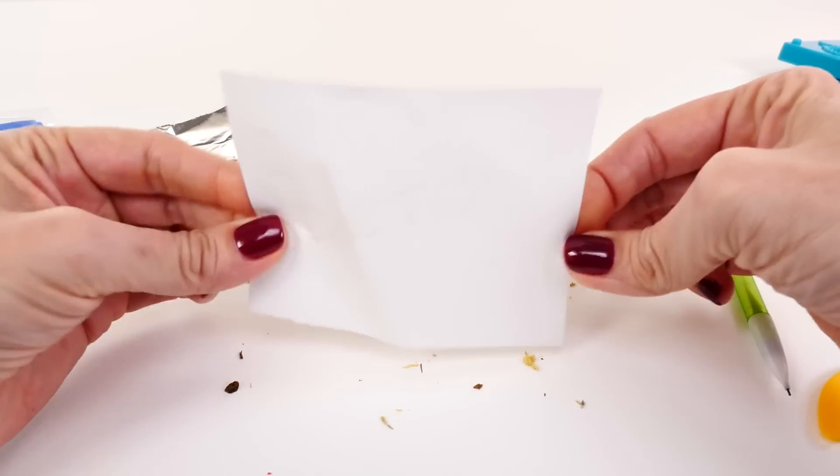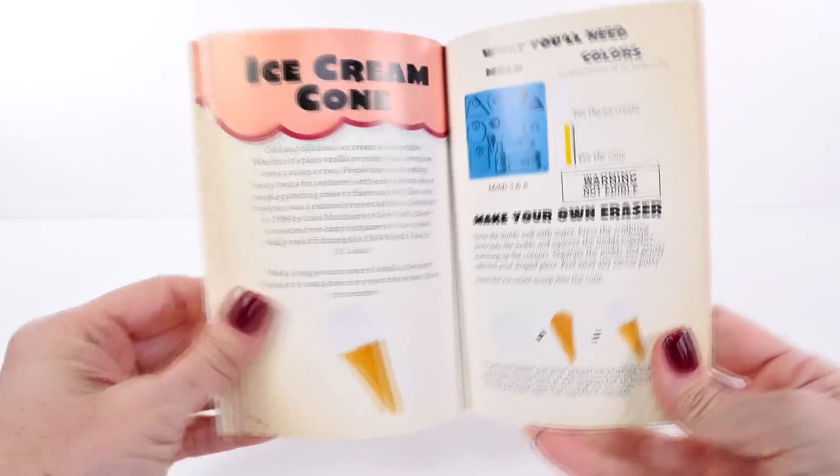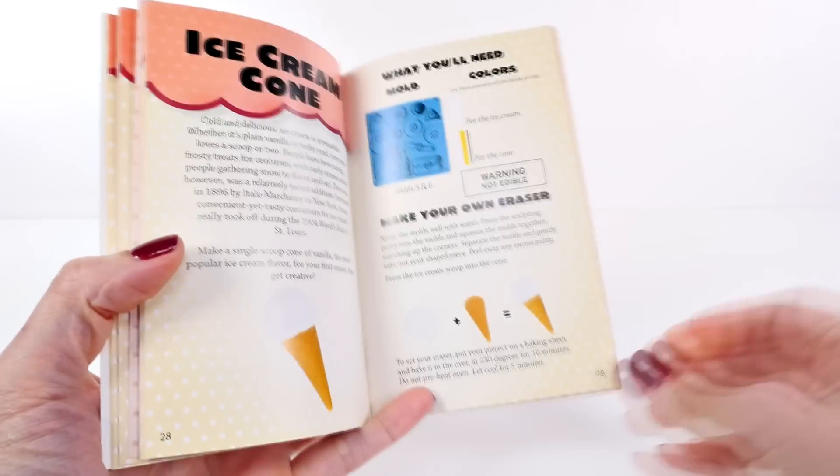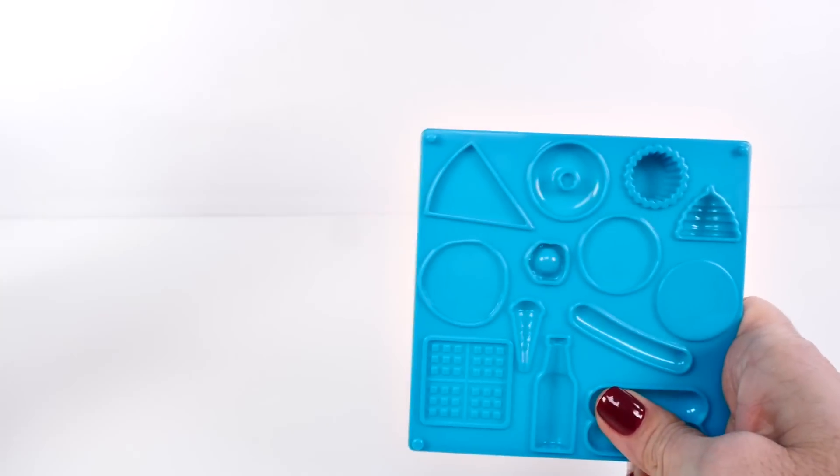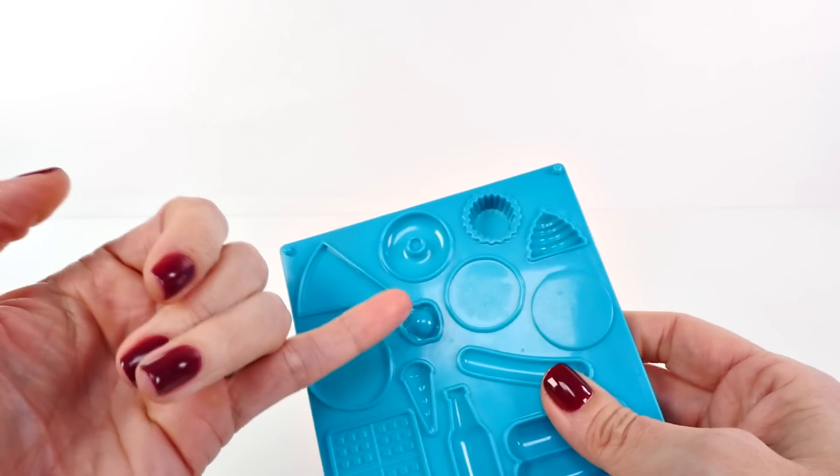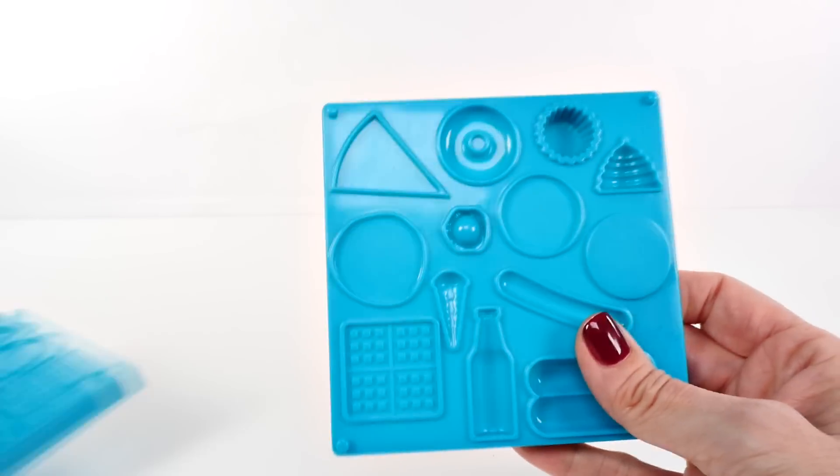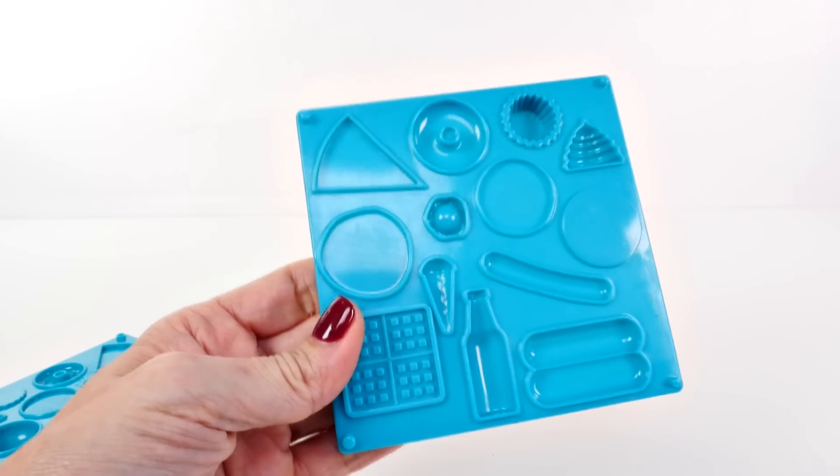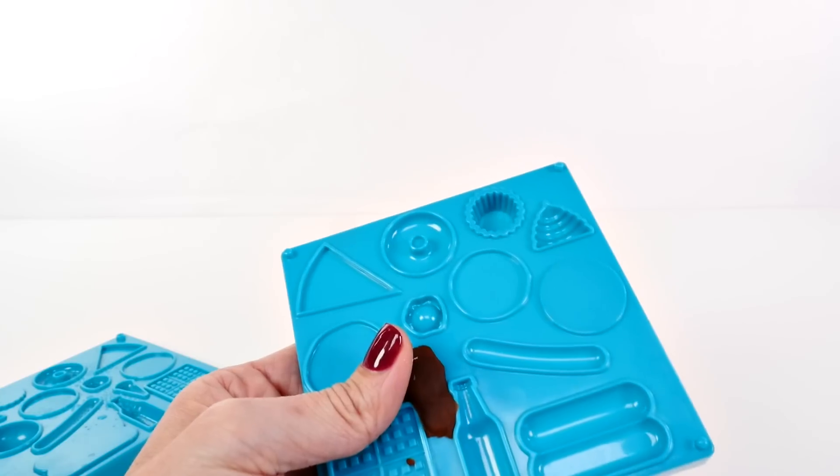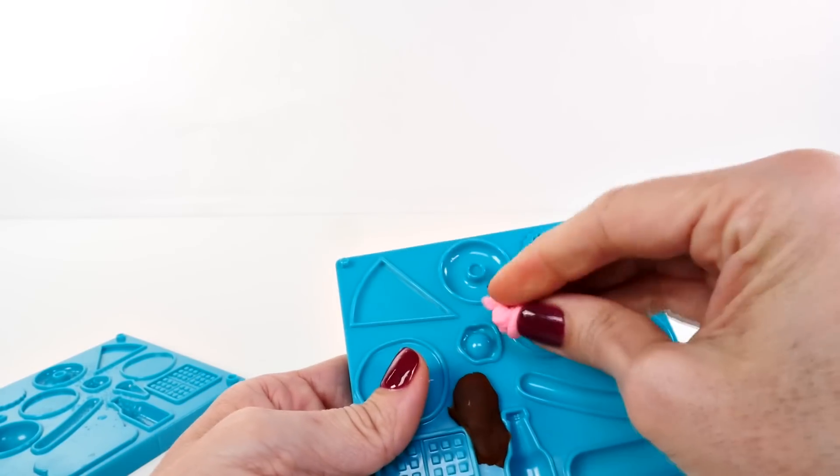Let's give the ice cream cone a try and we're gonna try this with Play-Doh, so it's definitely going to be different because the texture of the clay is different. This is the cone and this is the scoop. So let's take some brown, we'll press that into the mold, and let's do strawberry.